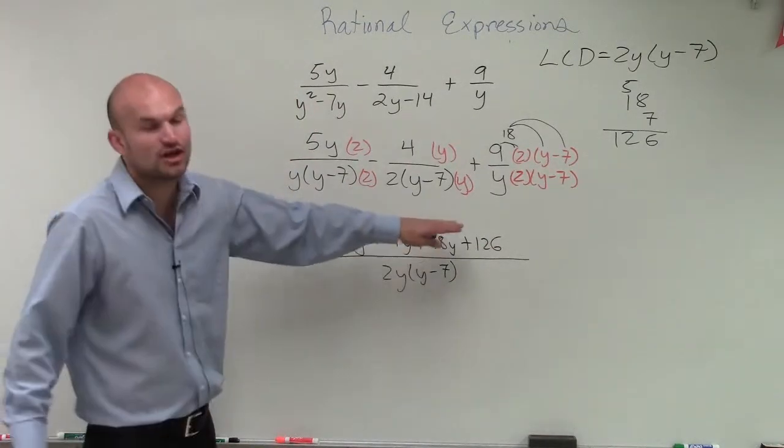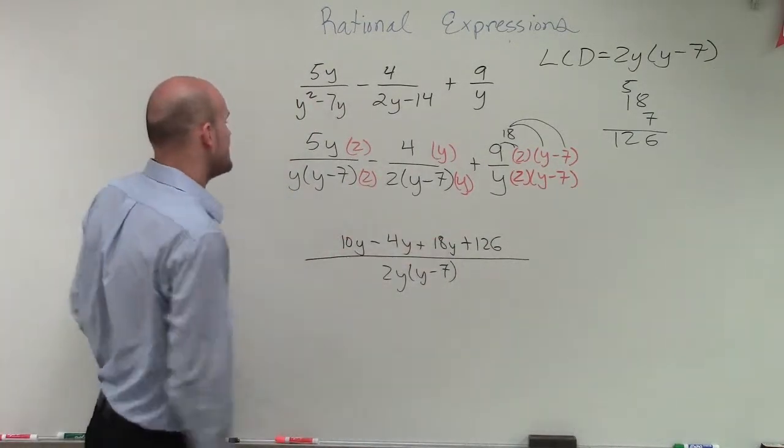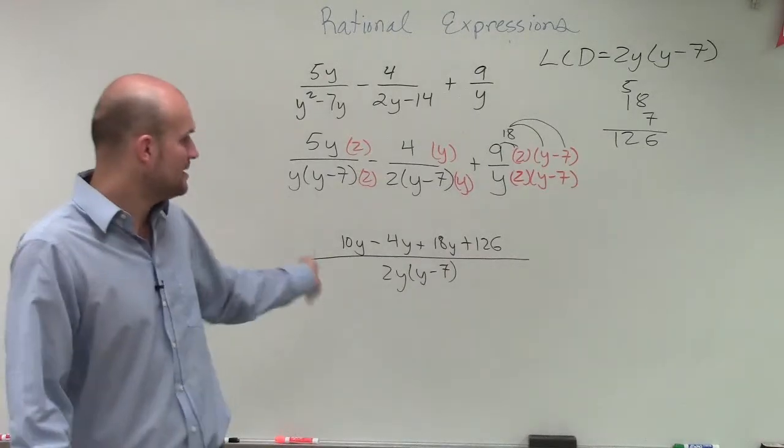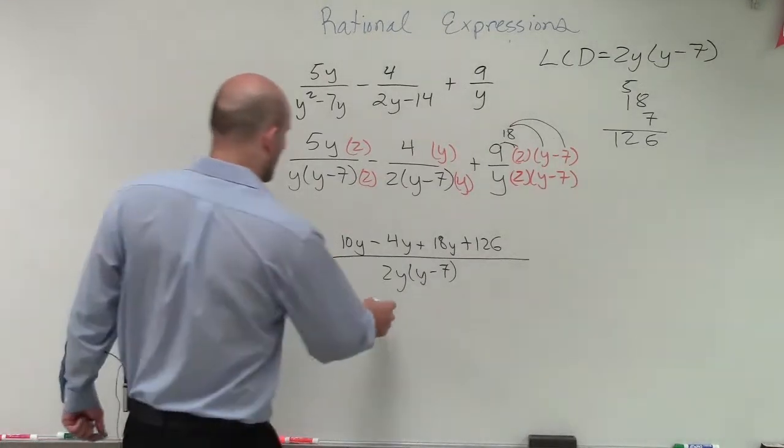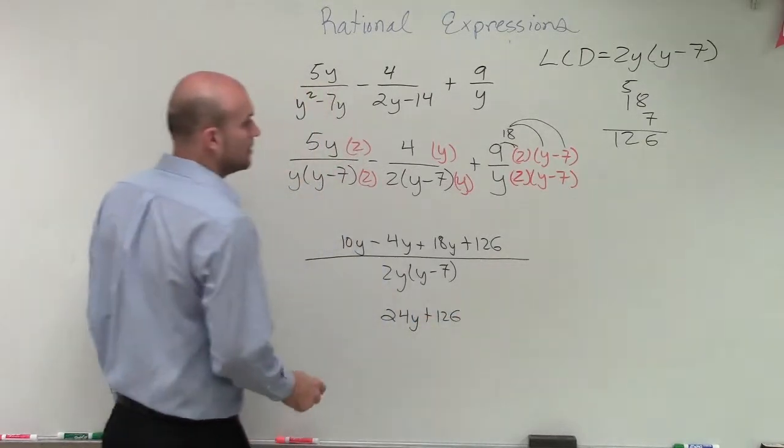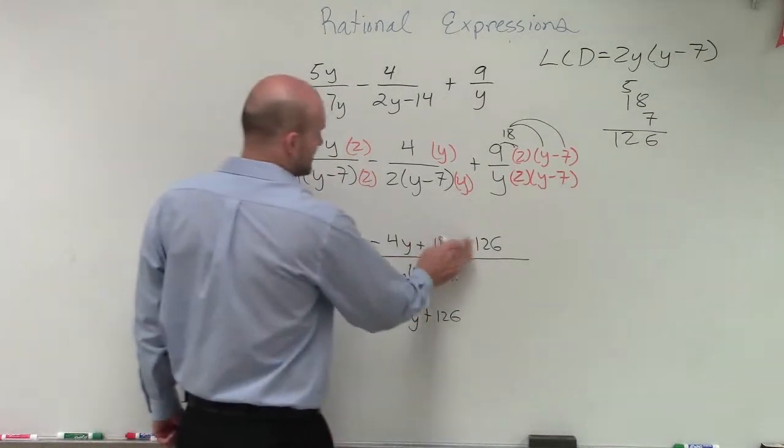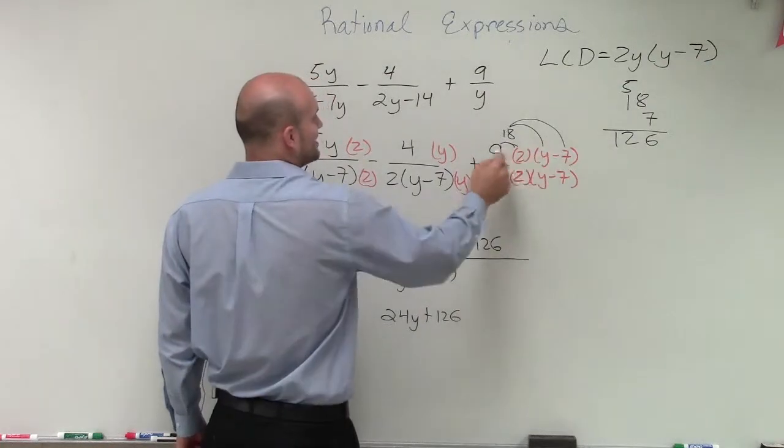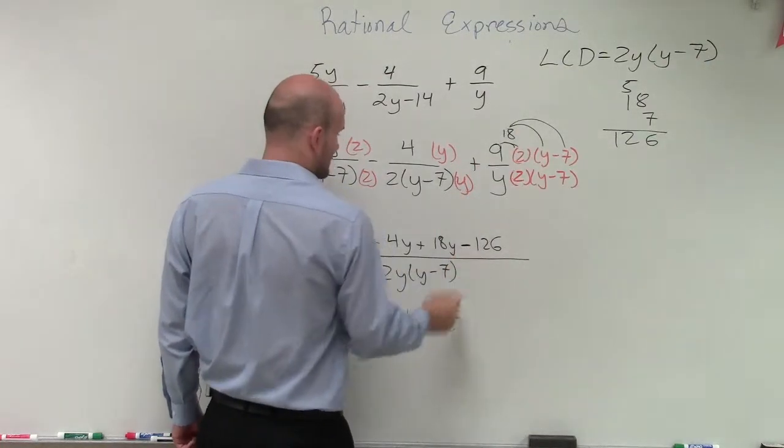Now, you notice that each one of these are a y, so I can combine them. So 10y minus 4y is 6y, plus 18y is 24y. Oh, that is actually a negative, right? Because 18 times negative 7, so that's a negative 126.